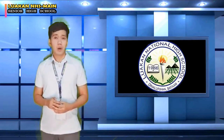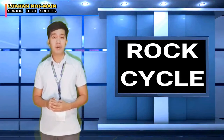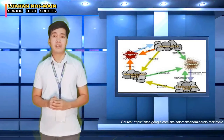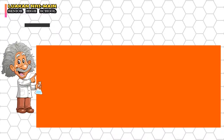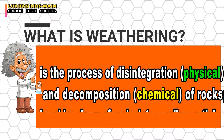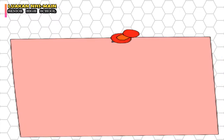You are probably already familiar with weathering and erosion, since these are the processes involved in the rock cycle. So what exactly is weathering? Weathering is the process of disintegration and decomposition of rocks — simply put, the breaking down of rocks into smaller particles. Weathering happens continuously, breaking smaller rocks down further into soil, sand, and even tiny particles called sediments.